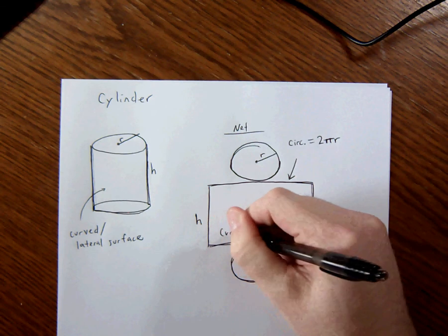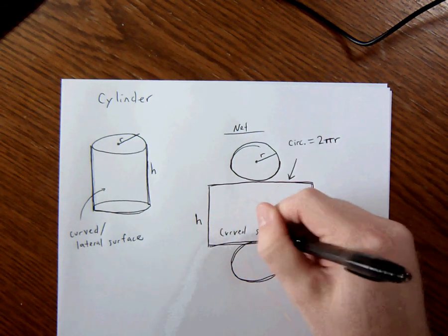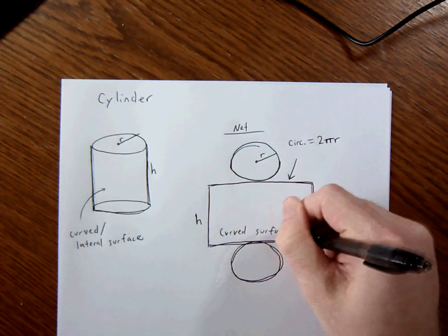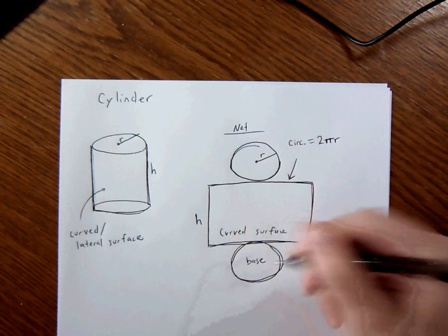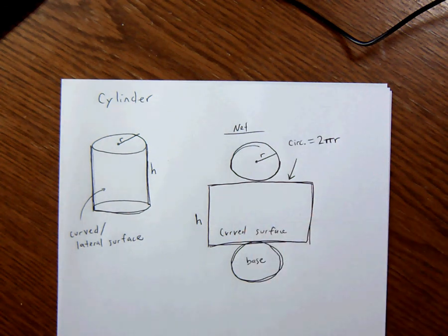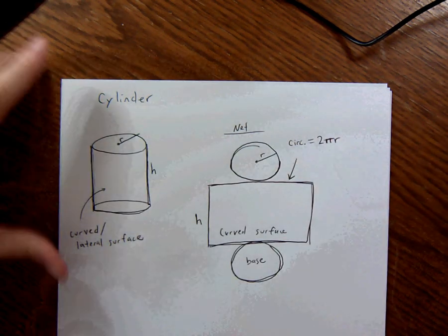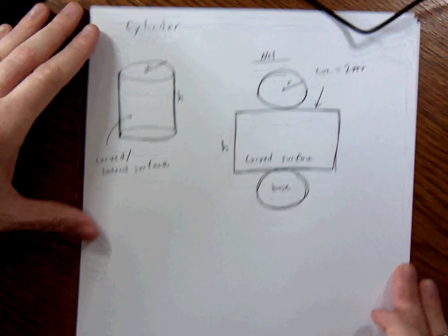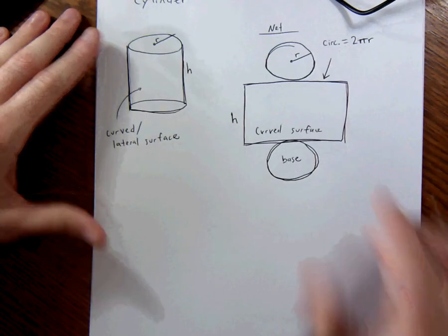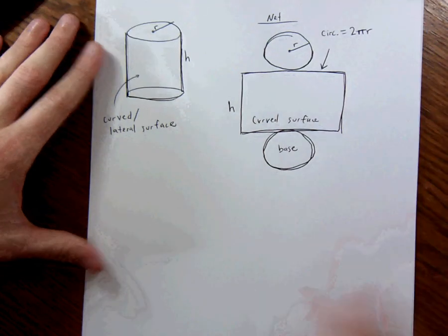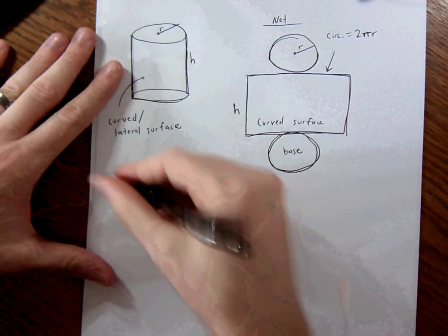So that's what the net kind of looks like. Remember, this is the curved surface. Just write that in there. And this is what we call the base. So that's kind of what it looks like, what the net looks like, the important parts.